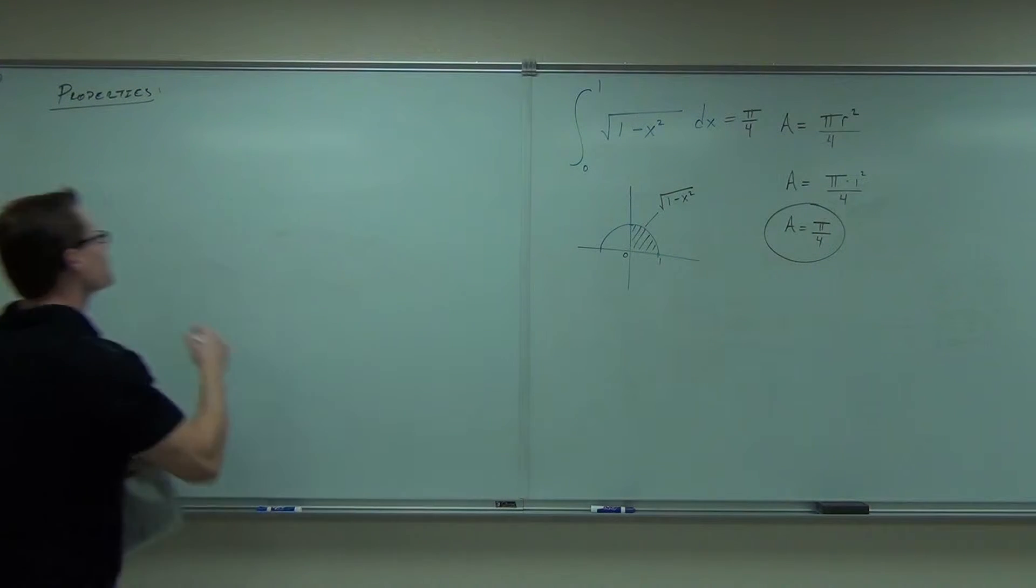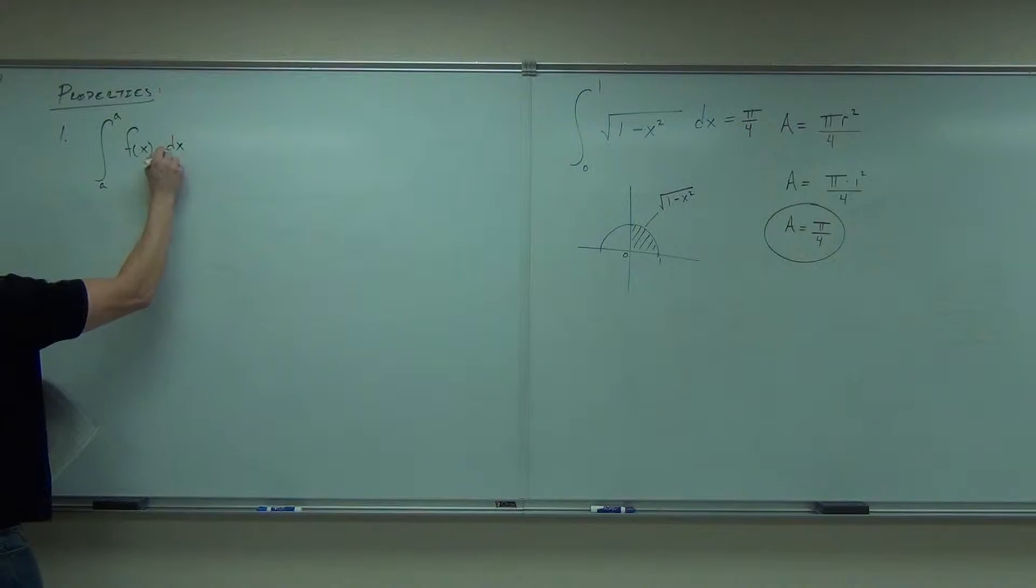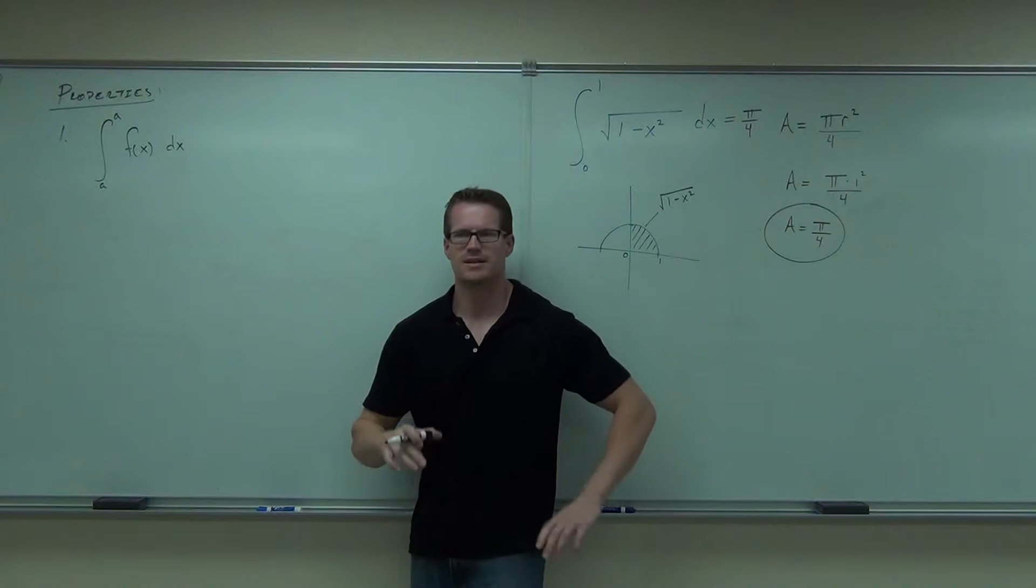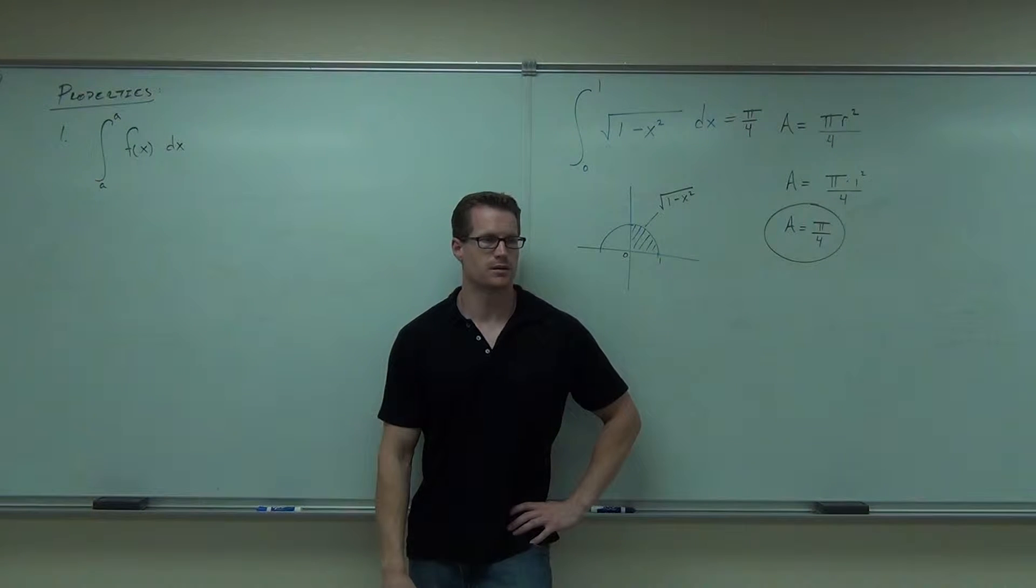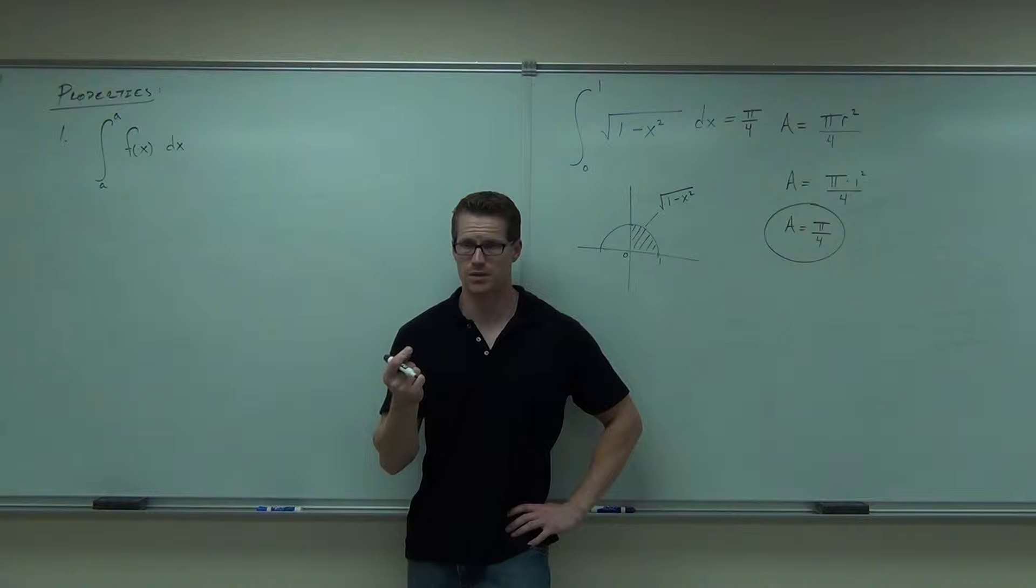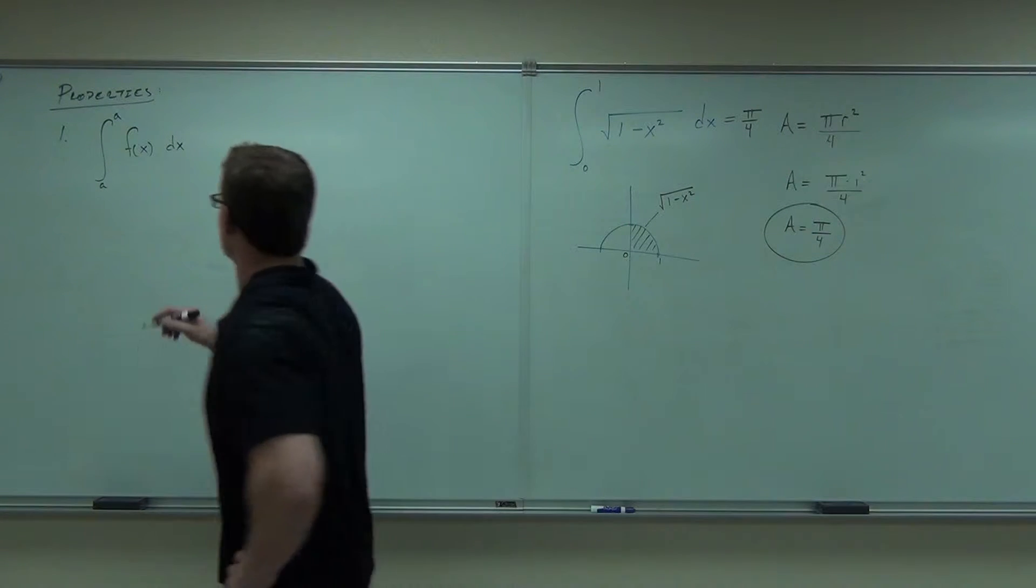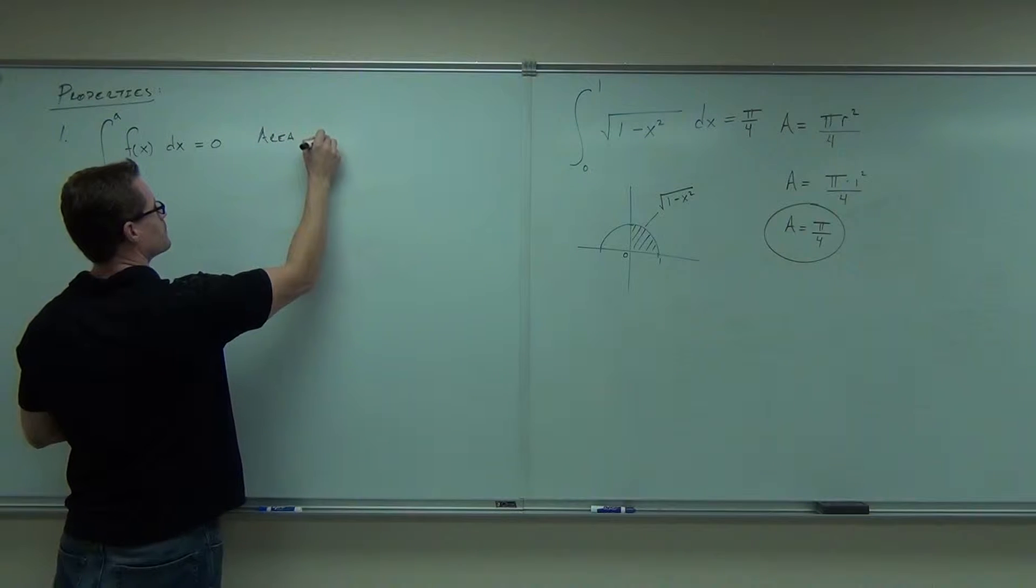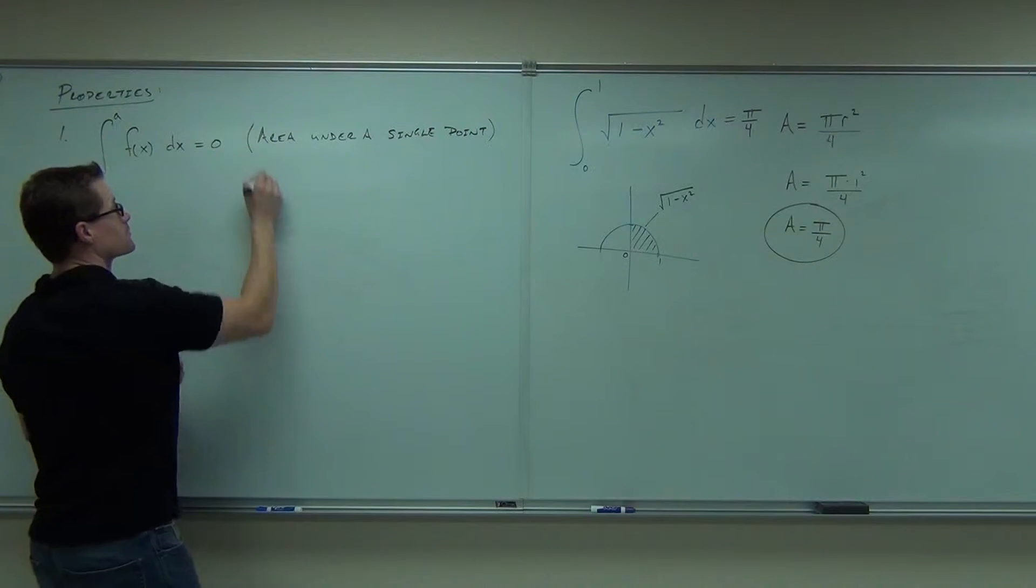So properties, number one property. Okay, think through this. Think about this. Yeah, exactly. What's the area? Remember, an integral is an area. An integral is an area. What's the area? Why? Because it's the same point. What's the area under a single point? There's zero. The width would be zero. The height doesn't matter. Zero times anything is zero. So whenever your bound goes from one number to another, and it's the same number, that's going to be zero. No matter what the function is, that's zero. This is the area under a point, basically. Which is why that doesn't work.